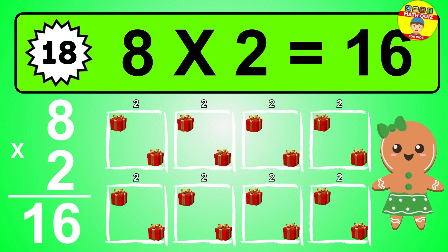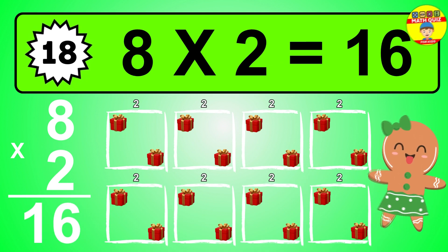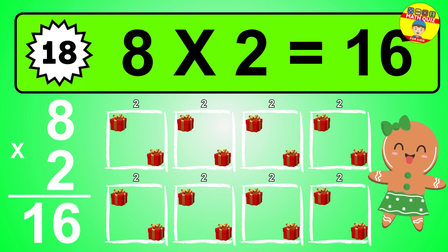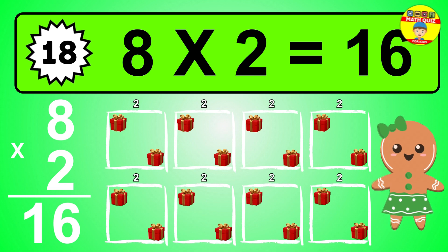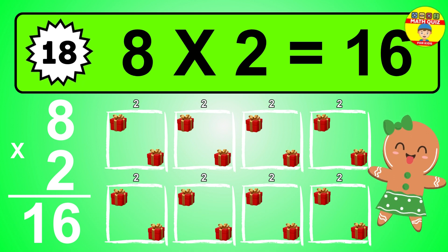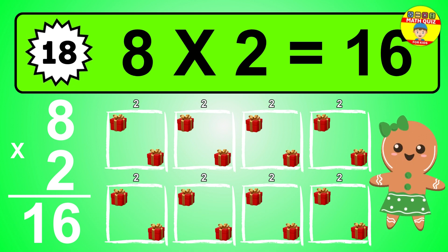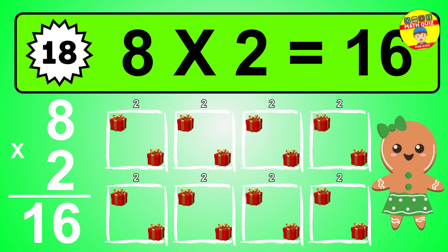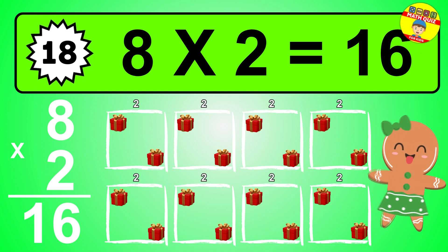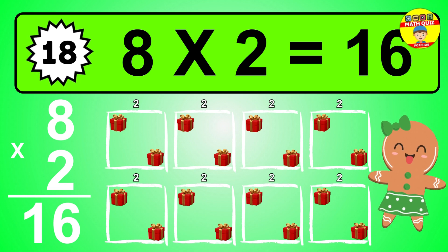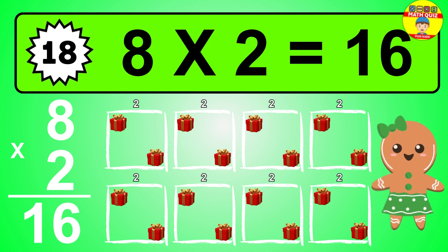The answer is eight times two is sixteen. To calculate, we have eight groups with two balls each one. So how many balls do we have? Sixteen balls.